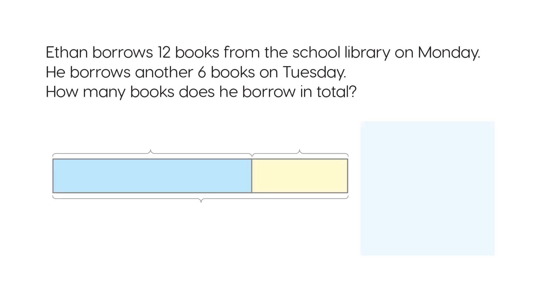We can use a bar model to help find the answer. He borrows 12 books on Monday. Let's write 12 here and label the bar as Monday.